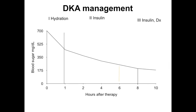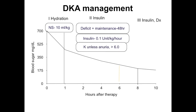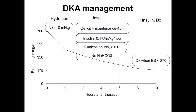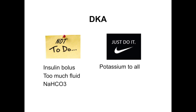Summary of DKA management: Start with 10 ml/kg normal saline bolus, then give fluid (deficit plus maintenance) over 48 hours. Start insulin at 0.1 unit/kg/hour. Add potassium to all fluids unless there is anuria, potassium above 6, or ECG changes of hyperkalemia. Add dextrose when blood sugar falls below 270 mg/dL. There is no role for sodium bicarbonate. Always be vigilant for cerebral edema — if sensorium deteriorates and blood sugar is normal, give mannitol immediately. Do not give insulin bolus, excessive fluid, or bicarbonate; always give potassium, monitor corrected sodium, and watch for cerebral edema.